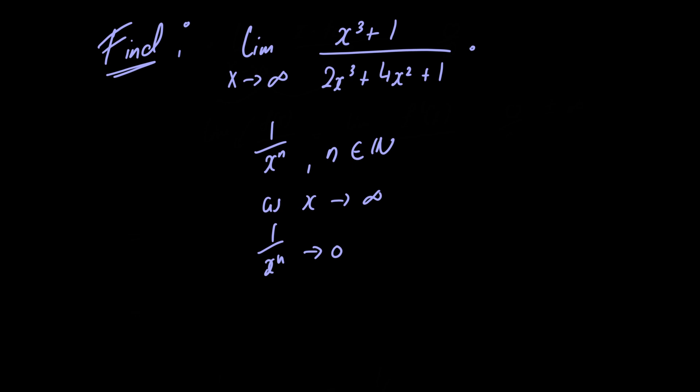The highest power we have is x cubed, so let's divide everything by x cubed. We have the limit as x approaches infinity of x cubed divided by x cubed plus 1 divided by x cubed, divided by 2 multiplied by x cubed divided by x cubed plus 4x squared divided by x cubed plus 1 over x cubed.